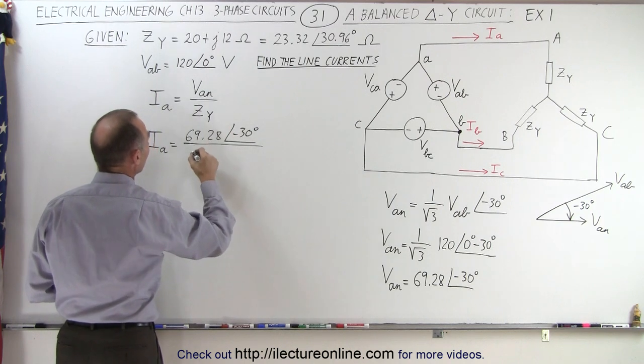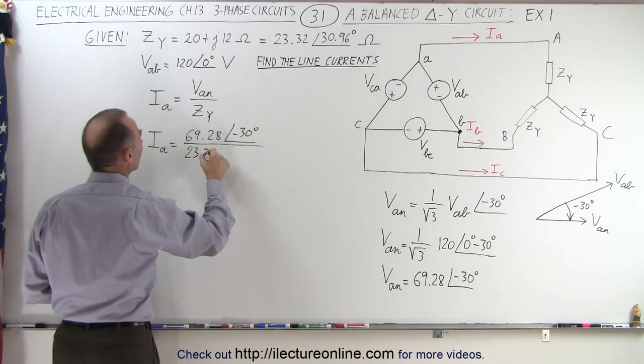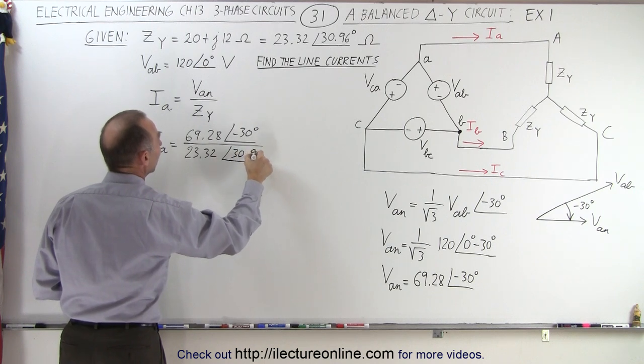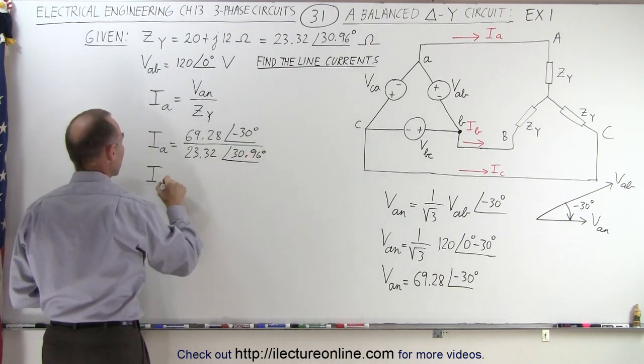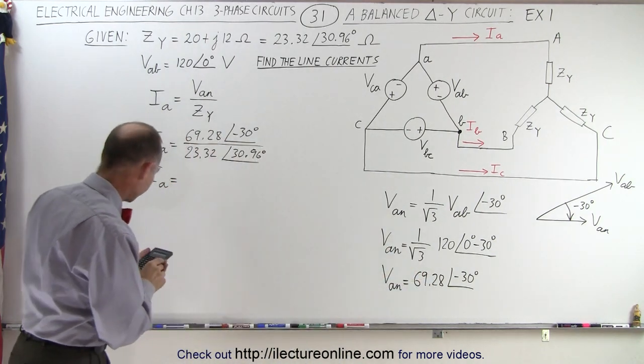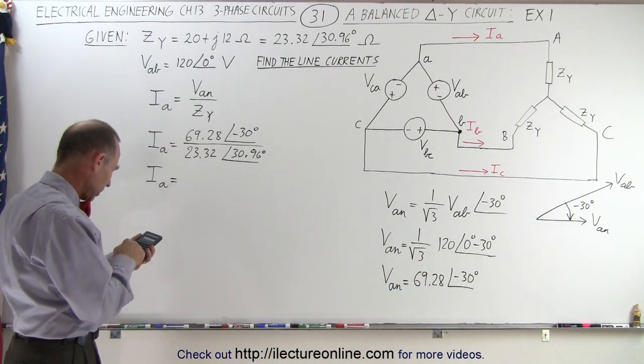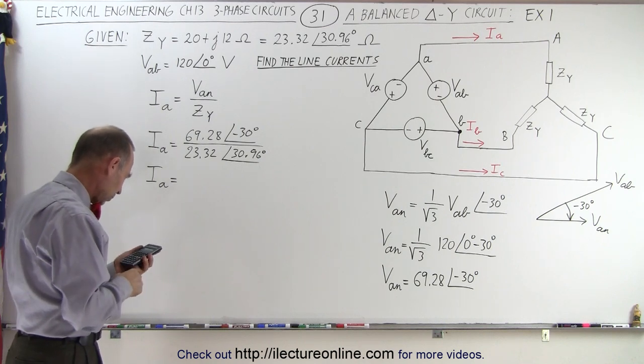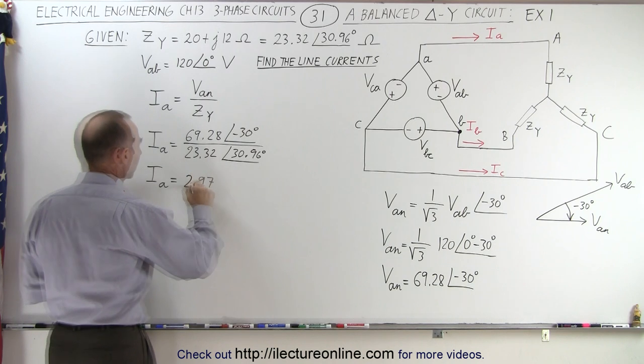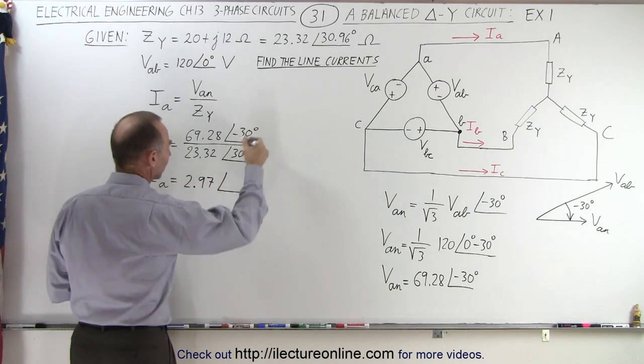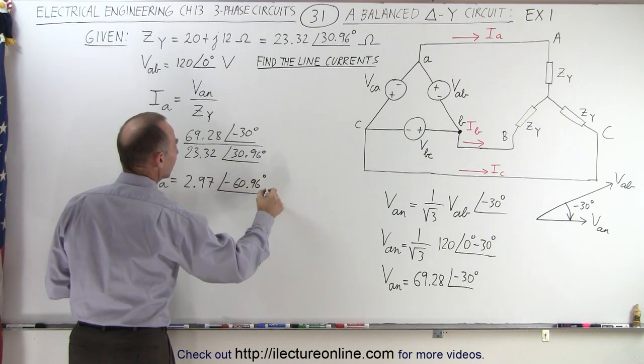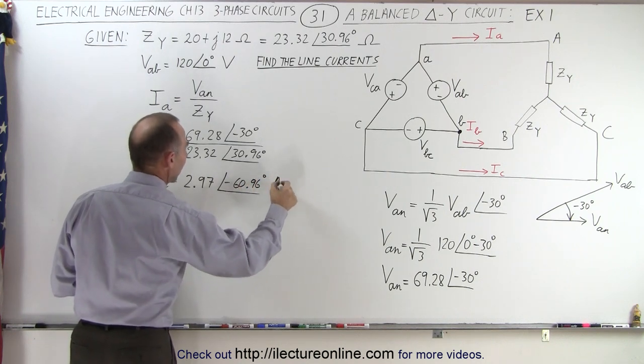Divide by the impedance of 23.32 with a phase angle of 30.96 degrees. And notice Ia is therefore equal to, with a calculator, 2.97 with a phase angle of minus 60.96 degrees. And that, of course, would be in terms of amps.